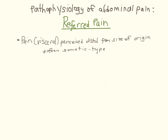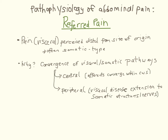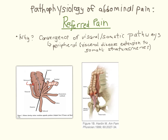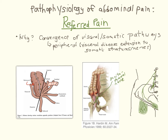Lastly, referred pain is when pain is felt distal from its site of origin and results from the convergence of visceral and somatic pathways. This may be central or peripheral, such as when visceral disease extends to parietal structures or somatic nerves. As an example, 30–50% of us have a retrocecal appendix, which, if inflamed, can irritate the psoas muscle and lead to the classic psoas sign. However, the genitofemoral nerve runs along the anterior surface of the psoas and can also be irritated, leading to referred pain along the genital branch to the scrotum and labia majora, and along the femoral branch to the anterior thigh.